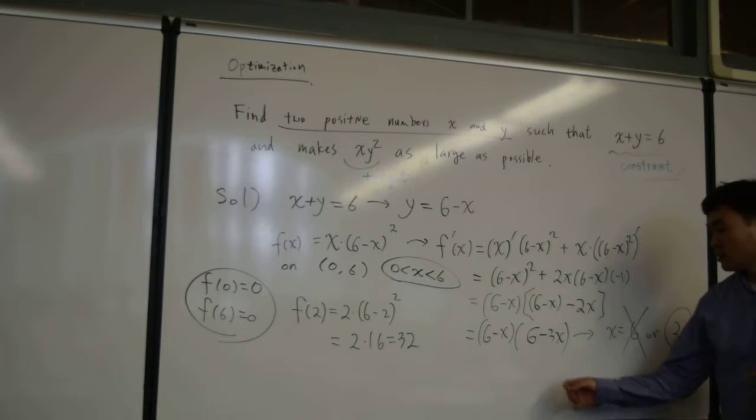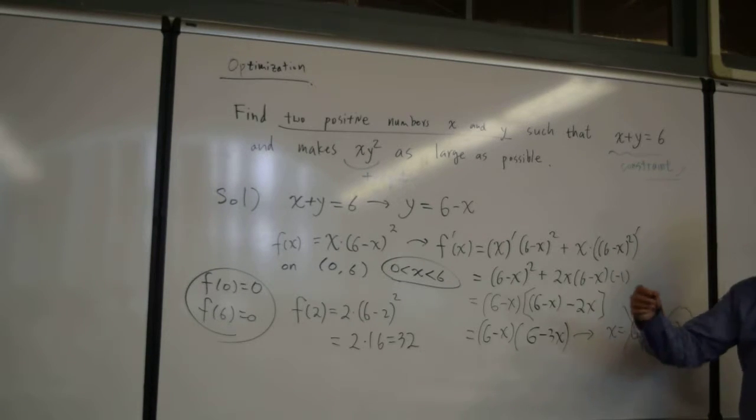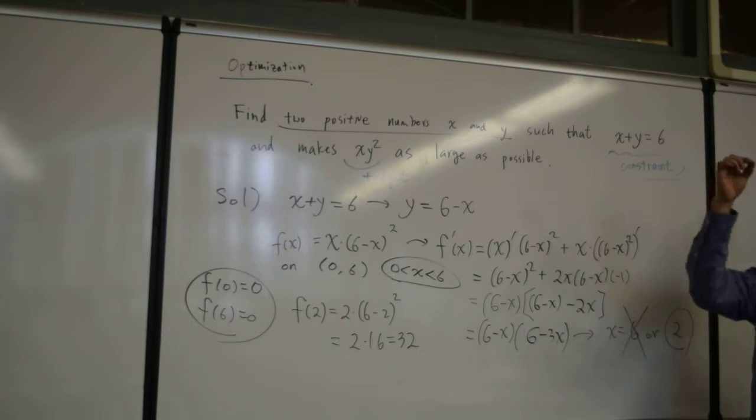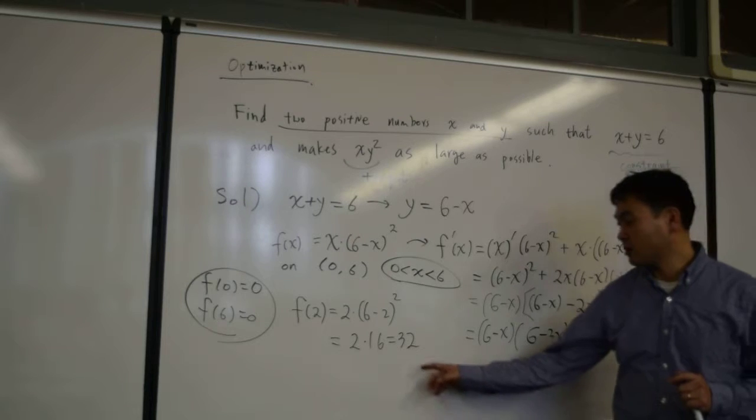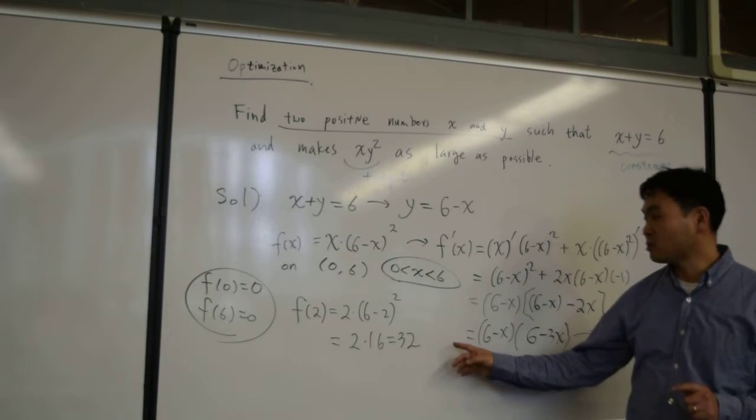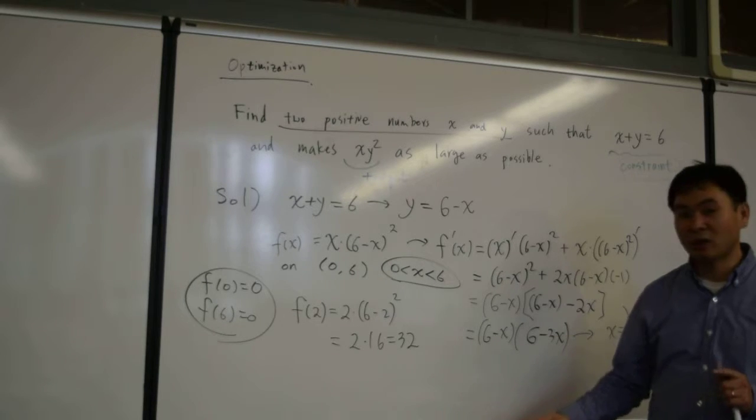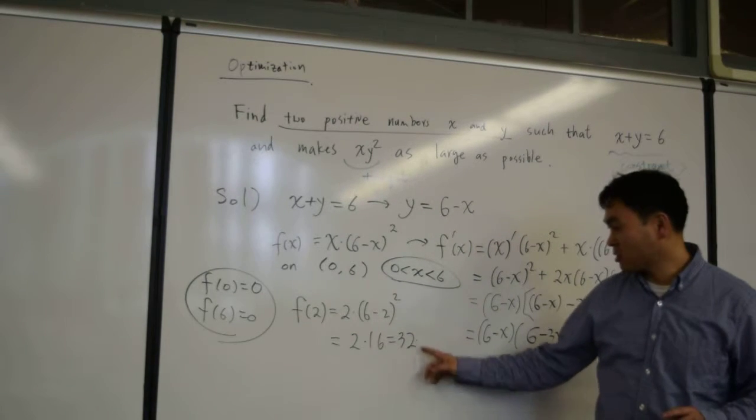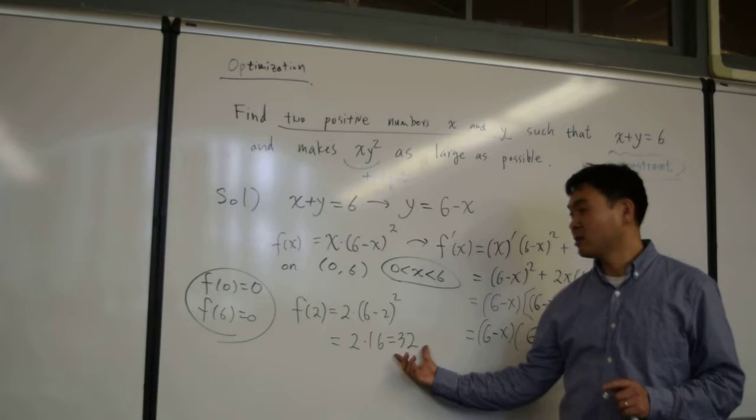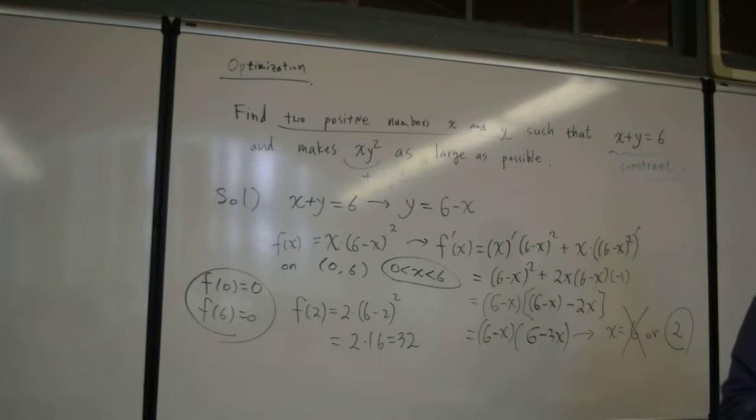You can further investigate, if you want, you can further investigate this f prime and determine that the function f is increasing before 2 and decreasing after 2. So it really is the only maximum point that you can have. But it's not necessary if you are just trying to find out the maximum or minimum. Since we know that the value has to appear at the boundaries or at the critical values, plug the boundaries in, plug in the critical value, and among these values, whatever is the biggest, it will be the largest value.